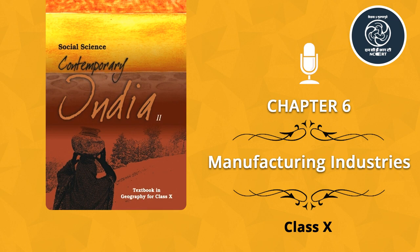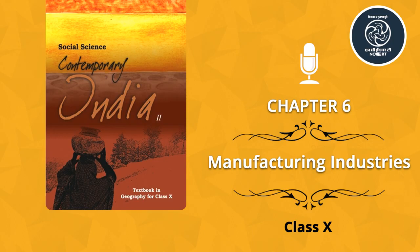Jute textiles: India is the largest producer of raw jute and jute goods and stands at second place as an exporter after Bangladesh. There were about 80 jute mills in India in 2010-2011. Most of these are located in West Bengal, mainly along the banks of the Hoogli River in a narrow belt that is 98 kilometres long and 3 kilometres wide. The first jute mill was set up near Kolkata in 1859 at Rishra. After partition in 1947, the jute mills remained in India but three-fourths of the jute producing areas went to Bangladesh, then East Pakistan.